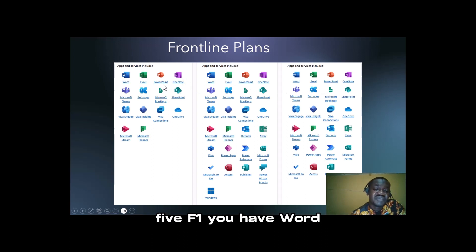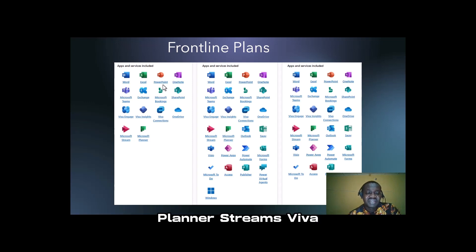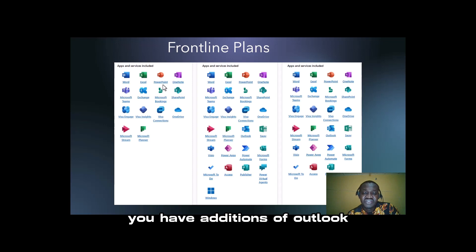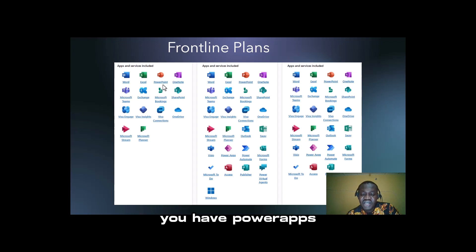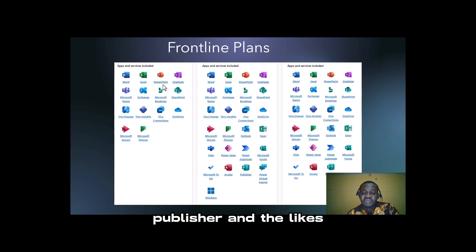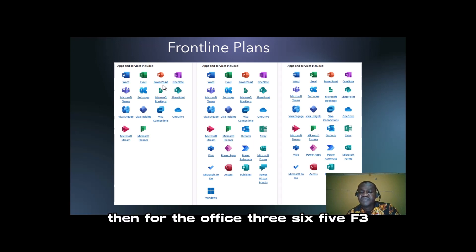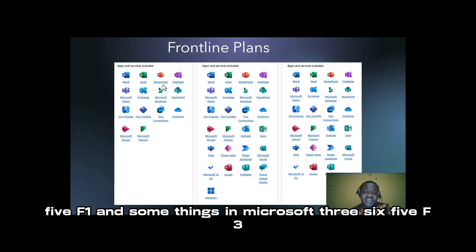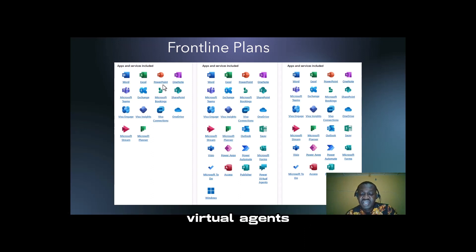For Microsoft 365 F1, you have Word, Excel, PowerPoint, Planner, and Stream. For Microsoft 365 F3, you have additional Outlook, Switch, Visio, PowerApps, automation, Forms, Publisher, and the likes. For Office 365 F3, it contains everything in Microsoft 365 F1 and some things in Microsoft 365 F3; however, things like virtual agents and Windows are not included in Office 365 F3.